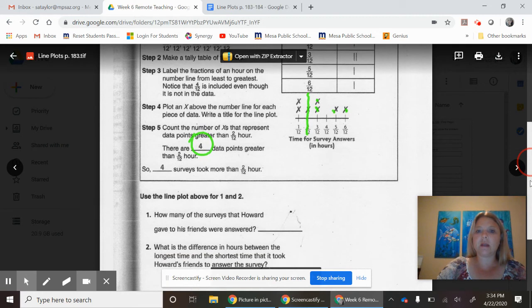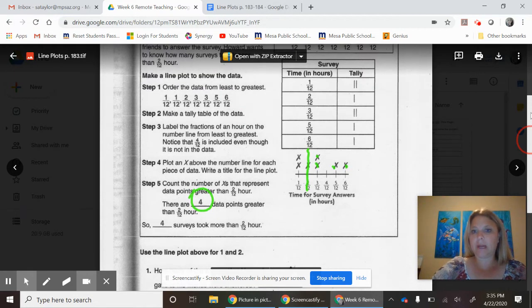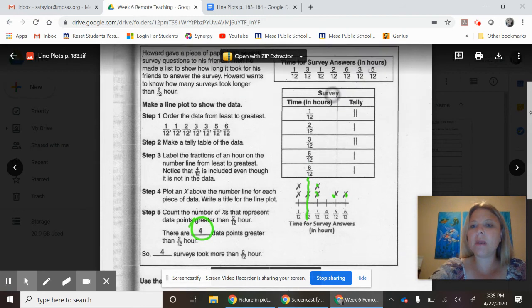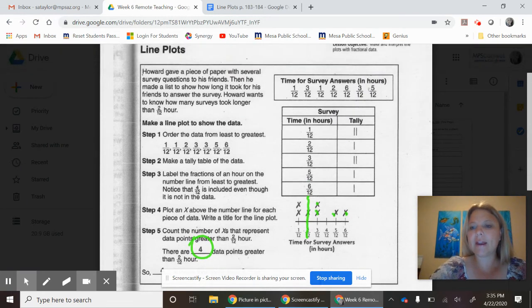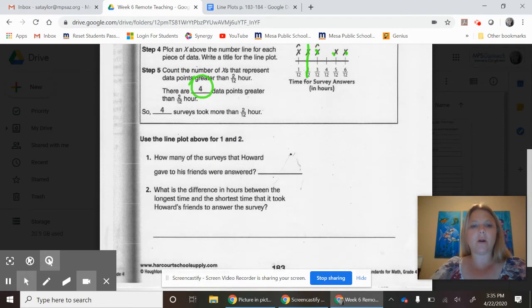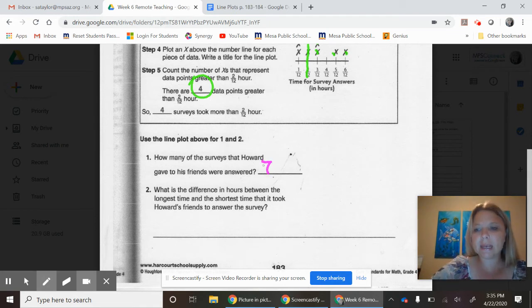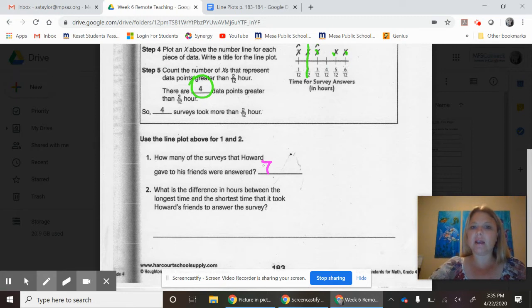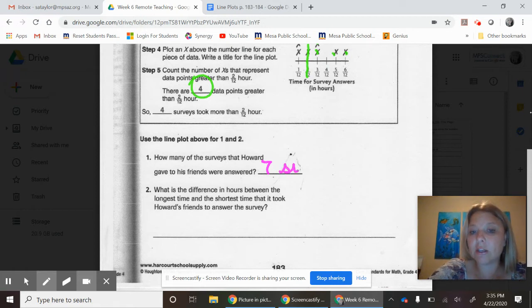Let's go down below and see what other types of questions they might ask us about this plot. How many of the surveys did Howard give his friends to answer? Once again, remember I was putting names with everybody. We want to count how many people were asked the survey. If I count through the tally marks, I have one, two, three, four, five, six, seven. So I have seven people who were asked the question.